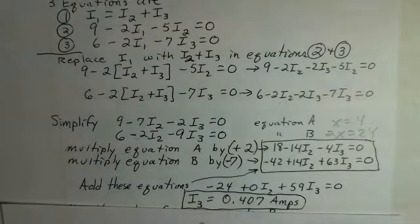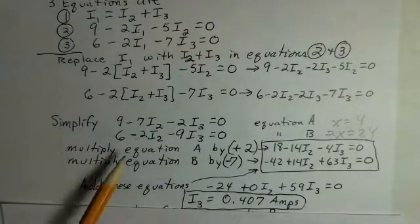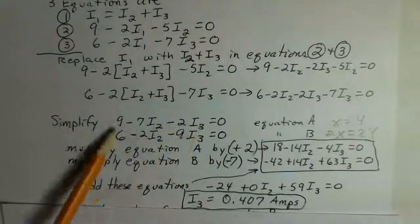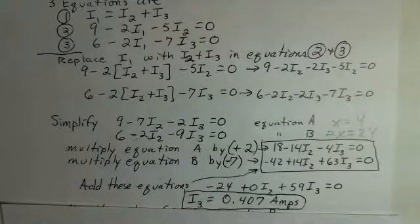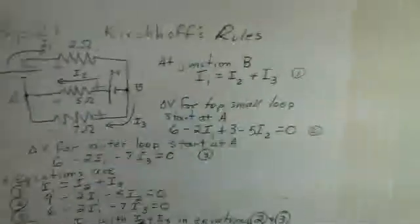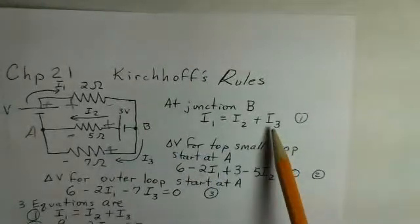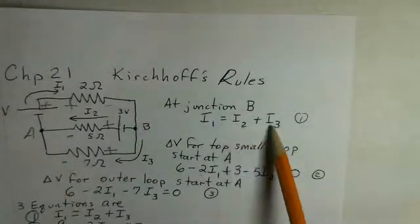We have two more currents to calculate, I2 and I1. Well, if we know the value of I3, we know a number, we can use either of these two equations and solve for I2. And once we get the value for I2, then we'll come back to our junction equation. We know I2, we know I3, we can calculate I1. So let's continue.